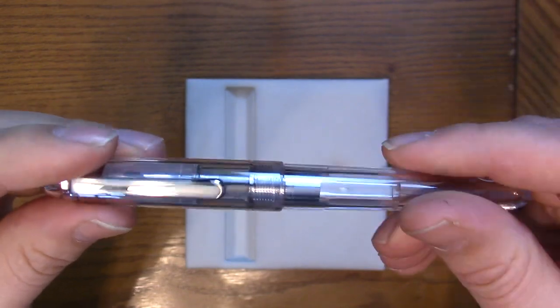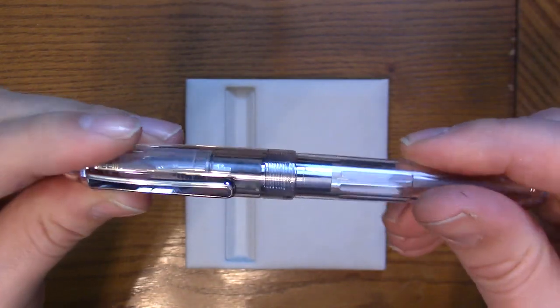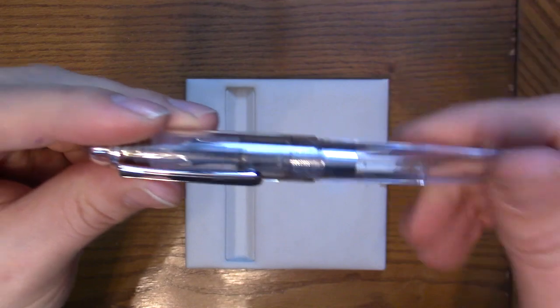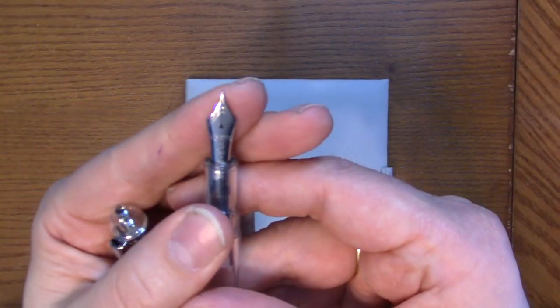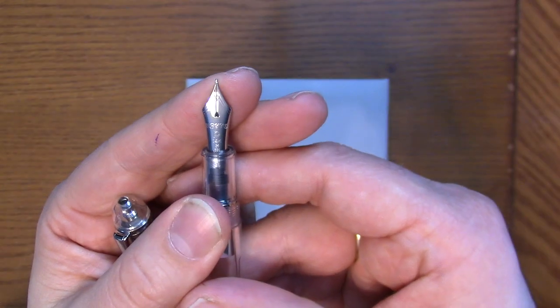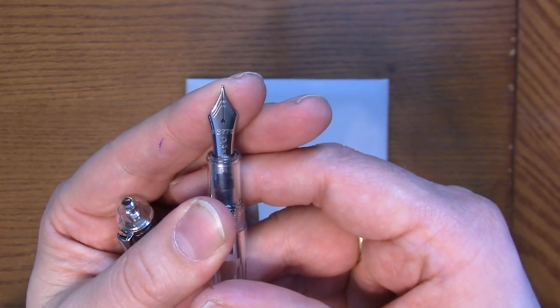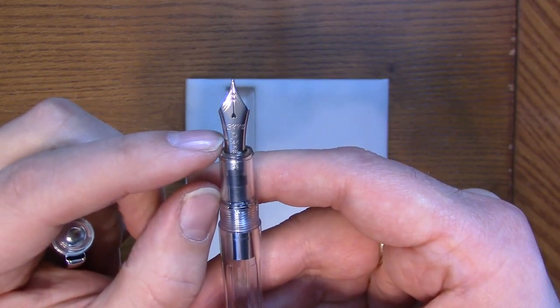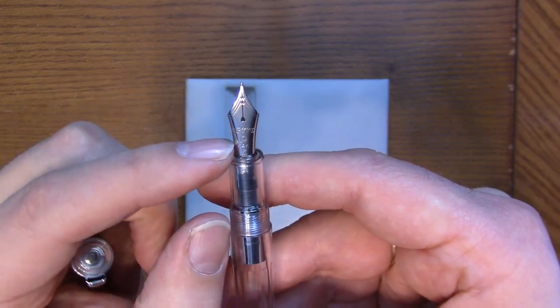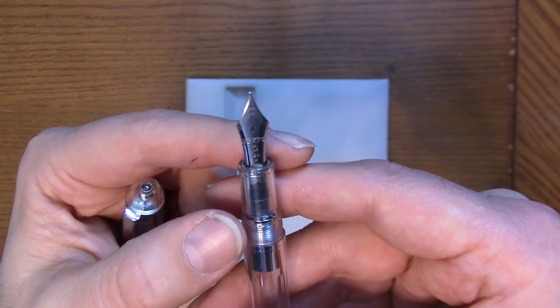And the pen is a cartridge converter. I'll show you the box in a minute. But we've got the standard rhodium plated 3776 14 karat nib. And nice and plain, simple. It says 3776 on there, the P for Platinum, 14K and then the nib size beneath it.